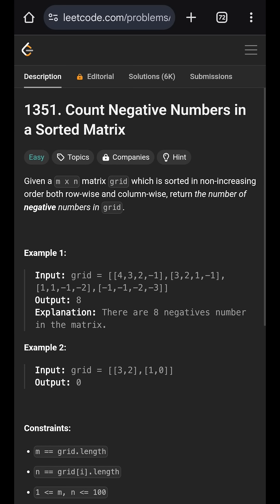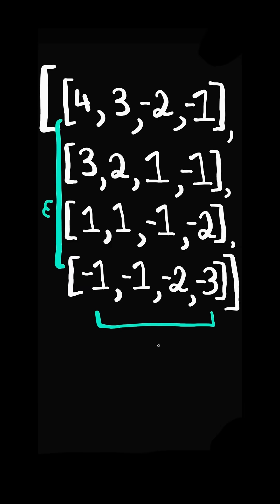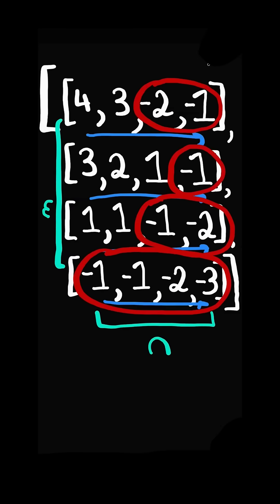Count negative numbers in a sorted matrix. Given an m by n matrix, count the number of negative numbers and return the count.